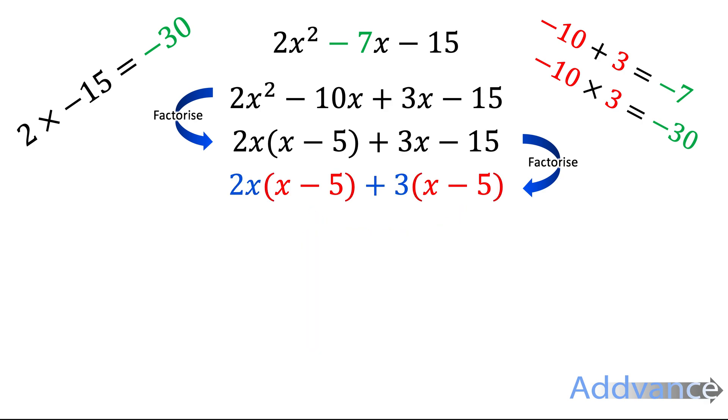Now the outside part becomes its own bracket and the x minus 5 part stays as a bracket. It looks like this. And now we have factorised this equation. We have put it into two separate brackets and that is factorised.